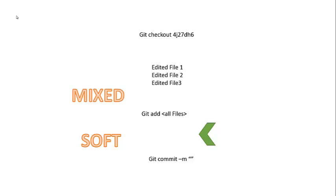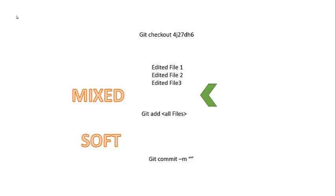If you do a mixed reset, it's going to point it back to here. It's saying you have not added these files to the staging index. Your head's pointed somewhere else. All it knows is that you've edited these three files and that you're on a different commit — or we could even call that a different branch.